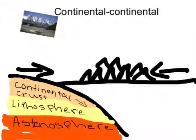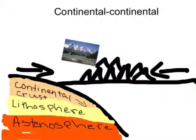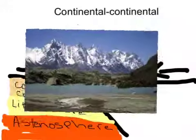Continental collision is a phenomenon of the plate tectonics of Earth that occurs at convergent boundaries. The continental crust is right here and the lithosphere is here. The continental crust and lithosphere will go down and the asthenosphere stays where it's at. Here's a picture or an example of the Himalayas.